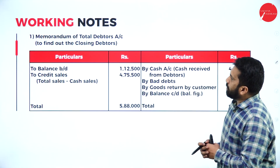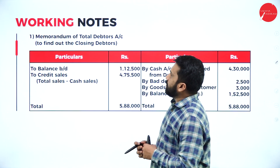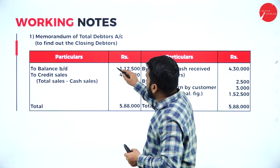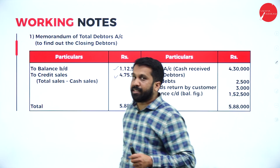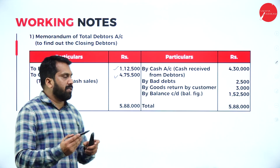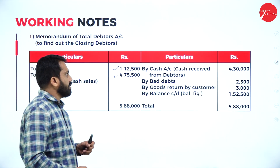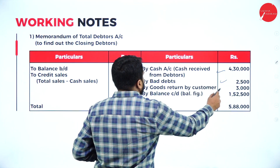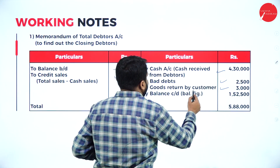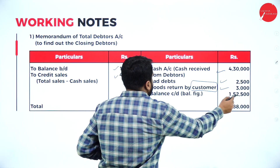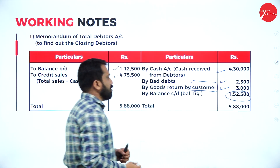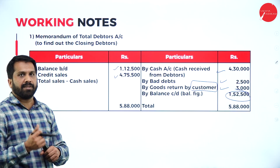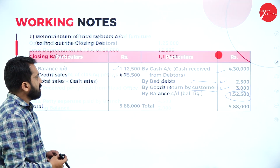Now these are the working notes. In the branch debtors account — opening debtors and credit sales on the debit side, as explained in the format. On the credit side: cash collected, bad debts, goods returned by customer. The difference will be called the branch debtors closing balance.